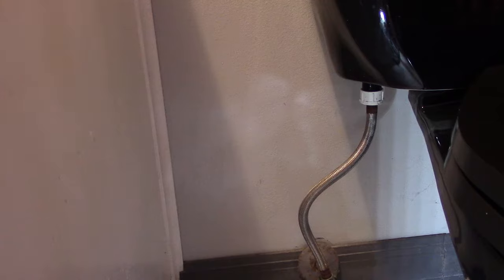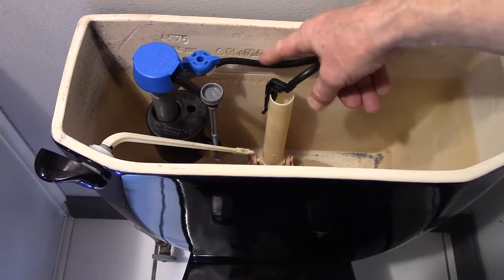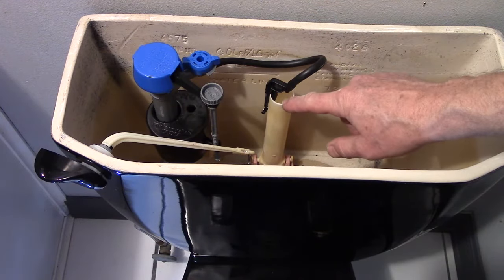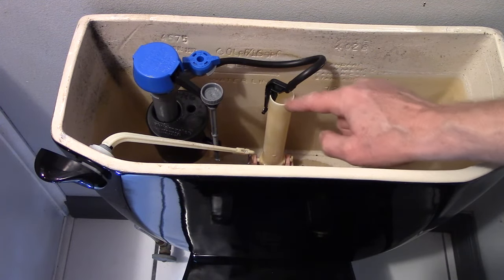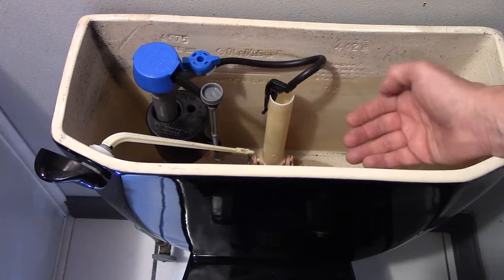Now connect your supply line to the fill valve. You want this hand tight, very snug. Don't over tighten it. Connect this fill tube to the flush valve. You want to make sure that the water is going down this tube. This is the water that's filling the bowl.